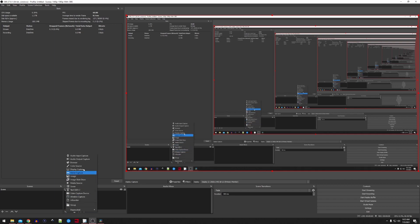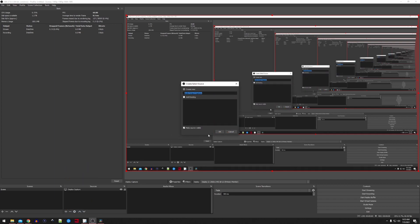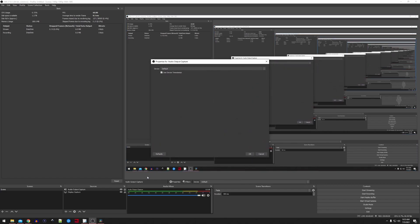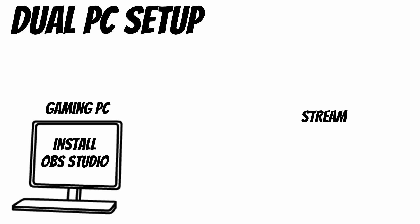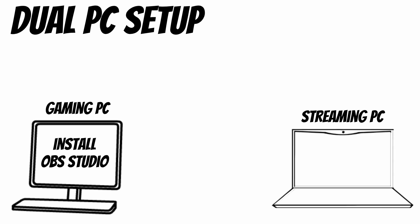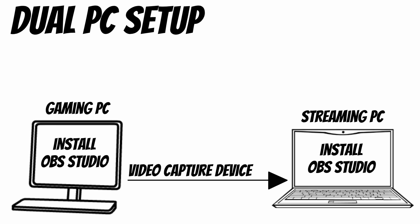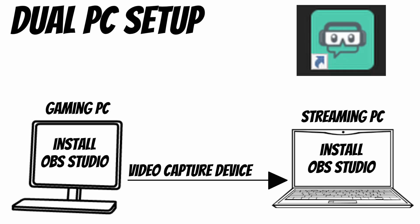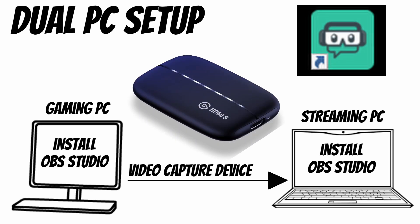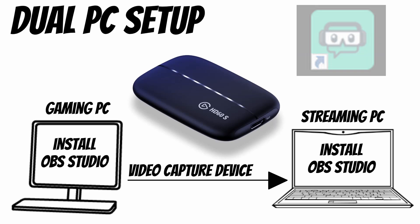And for a single PC setup that's really all there is to it. When you launch your game you should now be getting your maximum refresh rate at 1440p. The dual PC setup is a little more complicated. Just like with the single PC setup, you're going to want OBS Studio installed on both PCs. By the way, all of this should work with Streamlabs OBS as well — if you try it and find that it doesn't, please let me know in the comments down below.